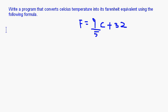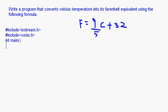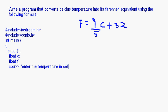For this we write: hash include iostream.h, int main, clrscr, then float celsius, float fahrenheit. Now cout: "Enter the temperature in Celsius" — the user enters the Celsius temperature and the program will convert it into Fahrenheit.